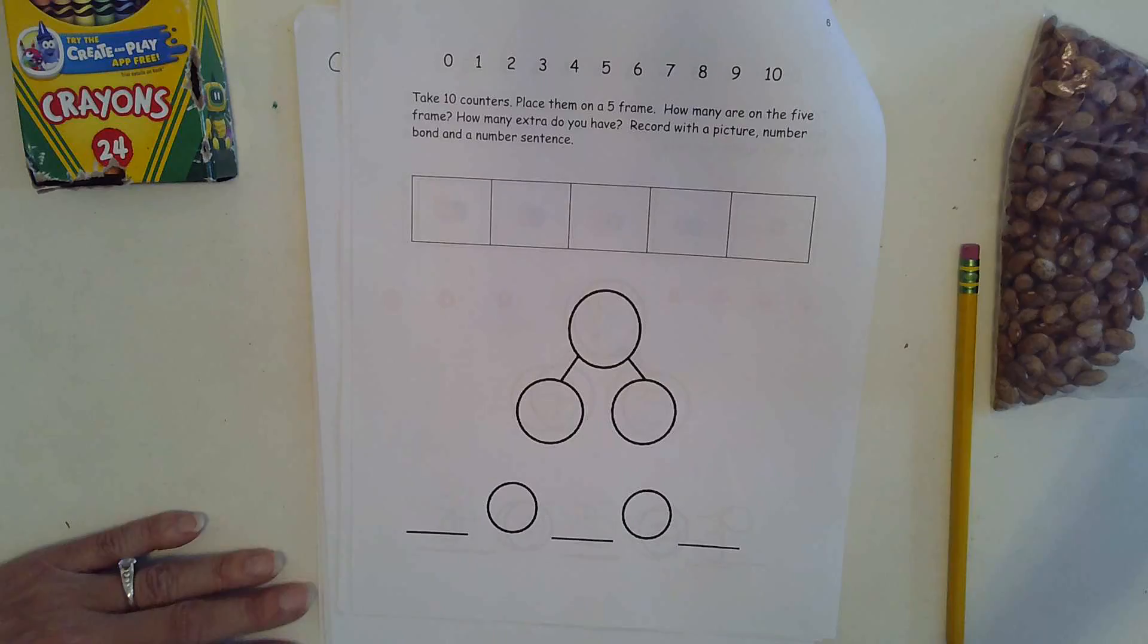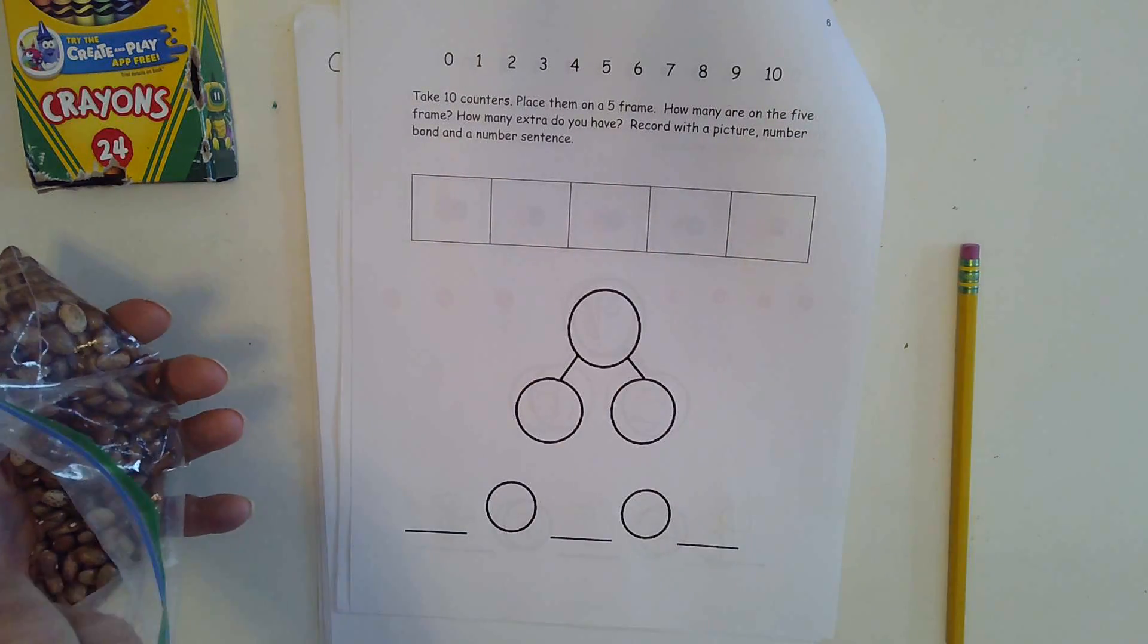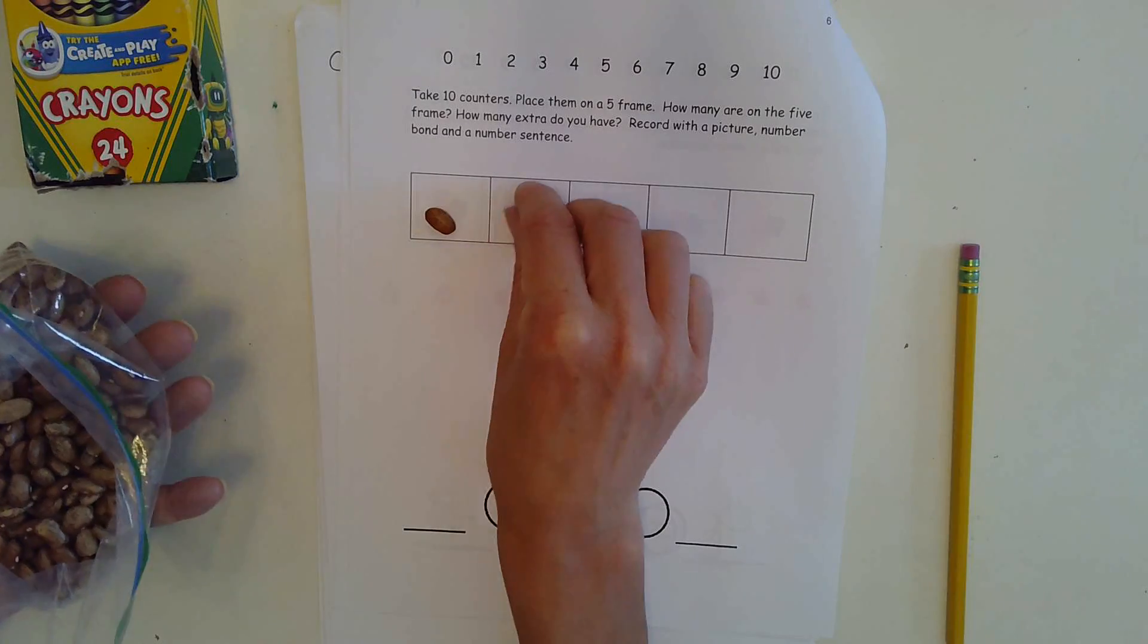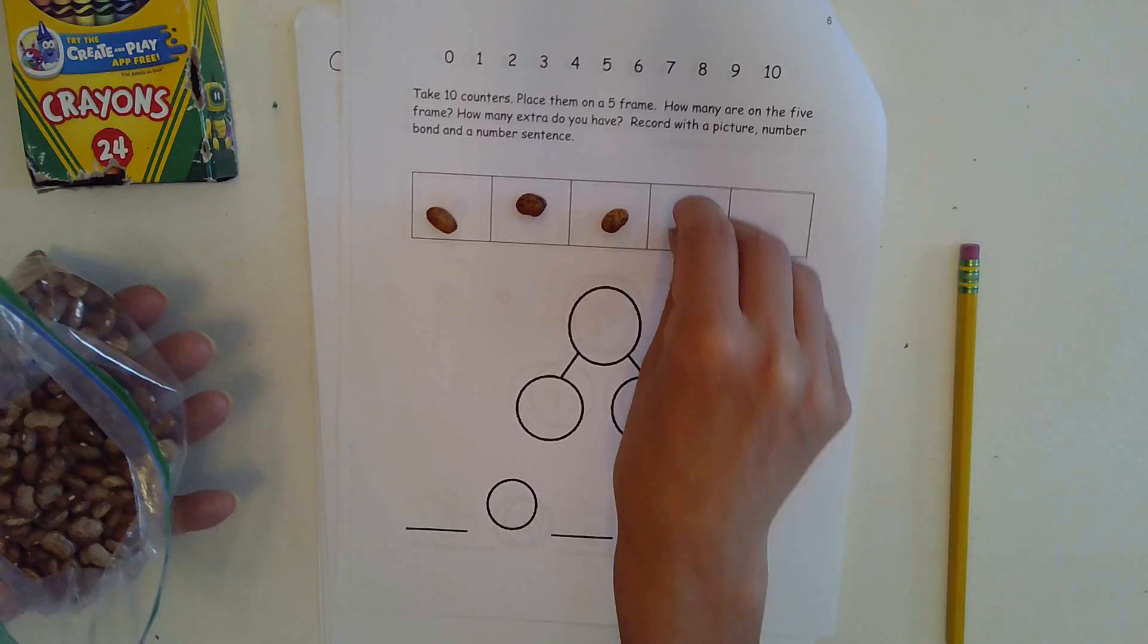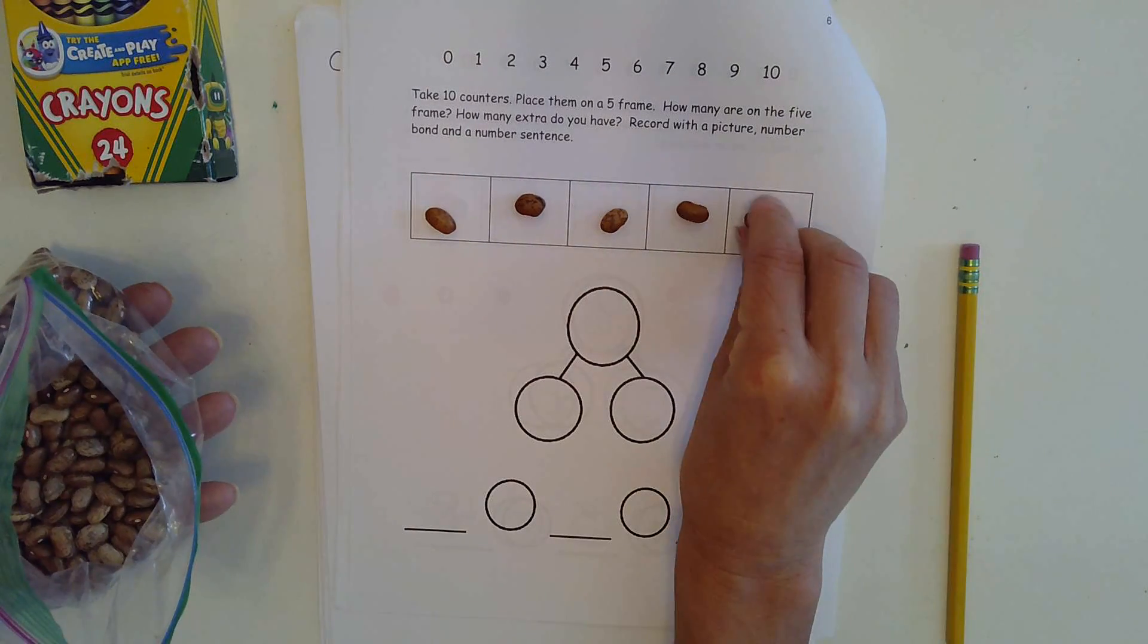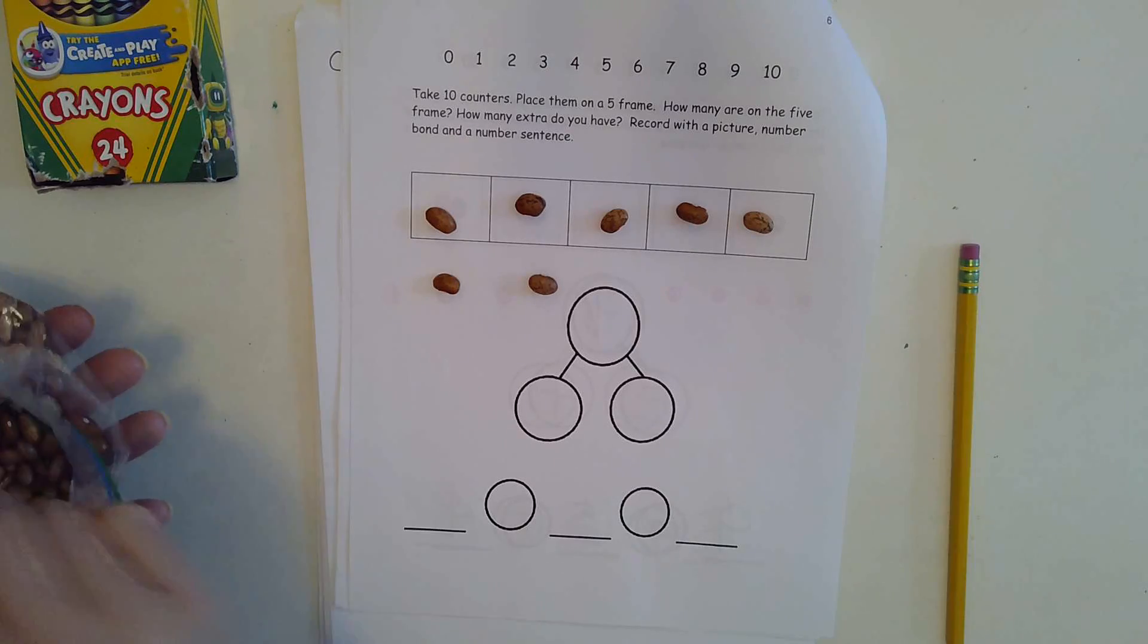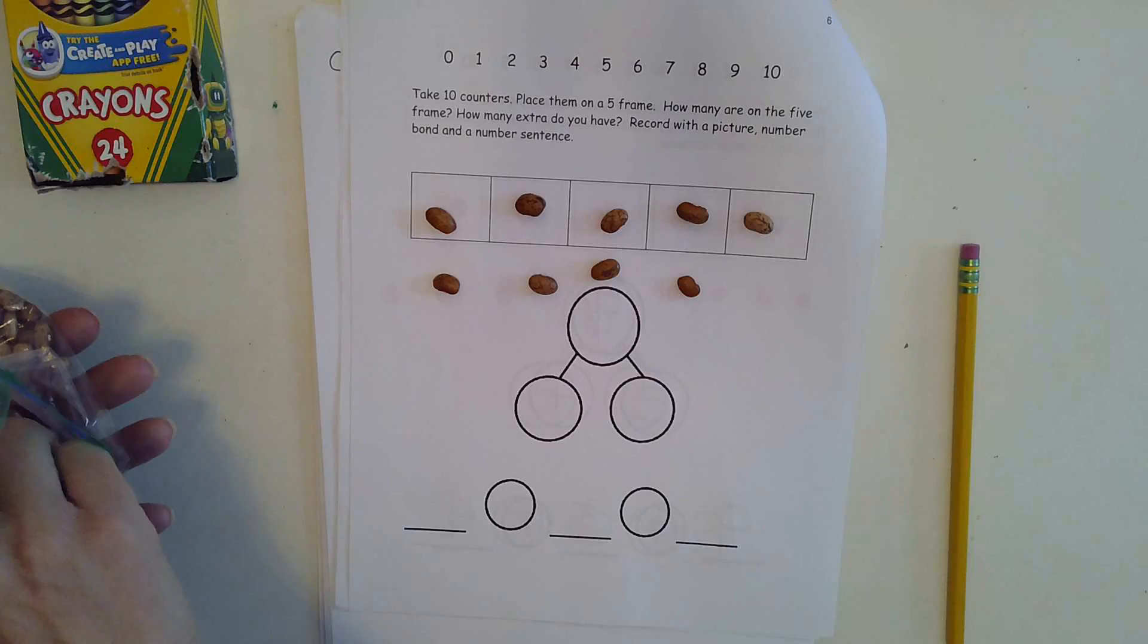So first we're going to take ten counters and place them on the five frame and then under the five frame for our extra. So one, two, three, four, five, six, seven, eight, nine, ten.